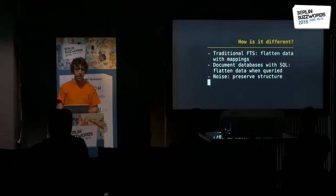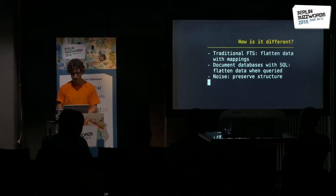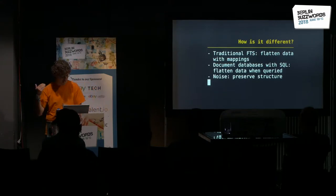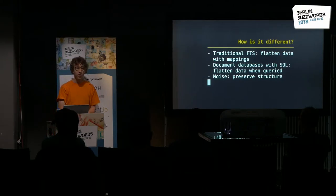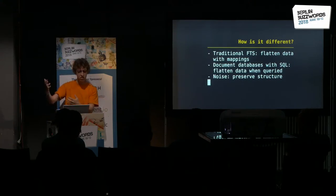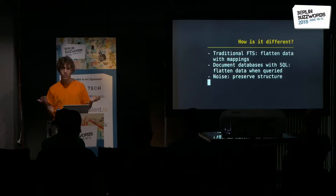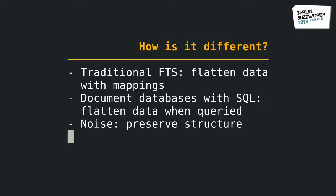Now how Noise is different from other databases — this is probably the most controversial slide in my deck. In a traditional full-text system, you normally flatten the data with some mapping — even though you input JSON, you need to map it into some flat structure. Or there are document databases with SQL dialects that flatten data on query time into a table structure, because SQL is really meant for tabular data. Noise is different because it preserves the structure both when inserted and when queried.